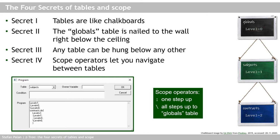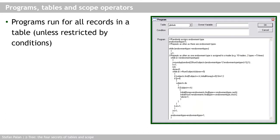Congratulations — you now understand tables and scope in Ctree. Now let's look at a slightly more realistic program, one that is a bit more complex, that will mostly focus on which tables the variables are located in and how we can access them using the scope operator. Remember that each program runs in a table, and this one runs in the globals table. Why do I often run programs in the globals table? Because the globals table always only has one row — one record — and that means the program only runs once, which is useful when I want to calculate things that don't need to be calculated for each subject separately.